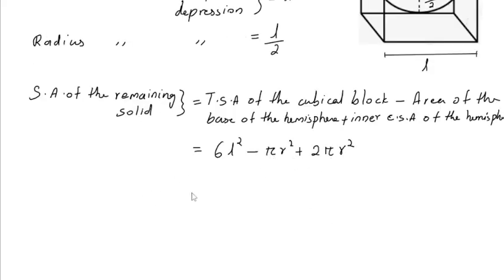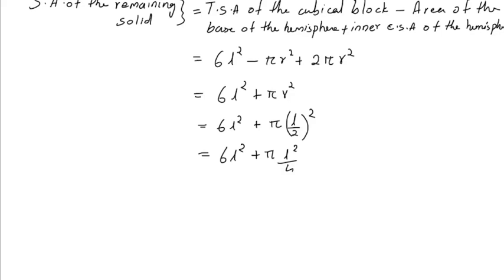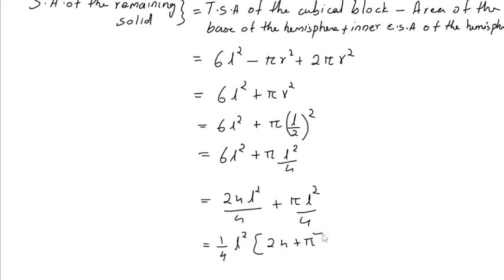Adding these together and substituting the radius r = L/2, we get 6L² + πr² + 2πr². Substituting r = L/2 gives 6L² + π(L/2)² + 2π(L/2)², which simplifies to 6L² + πL²/4 + 2πL²/4. Taking 1/4 as common, this becomes (1/4)L²(24 + π). So, the surface area of the remaining solid is (1/4)L²(24 + π).